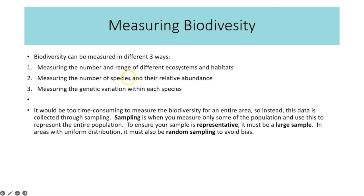To look at the number or type of species in an area, we use sampling. It would be too time-consuming to count every single individual of every species in an entire area, so instead we measure only some of the population and use this to represent the entire population. For this to be an accurate representation, the sample must be representative, meaning it has to be large. If the area has a uniform distribution, we must randomly sample to avoid bias.